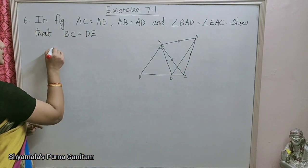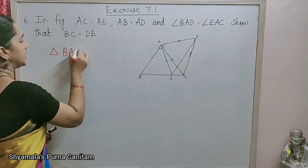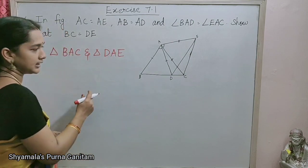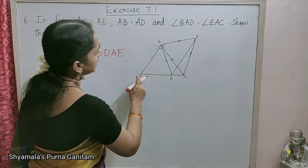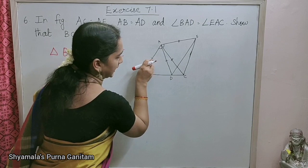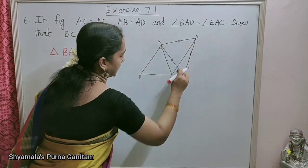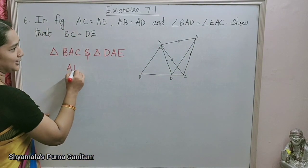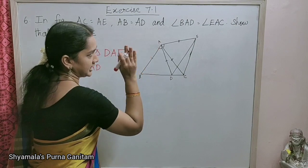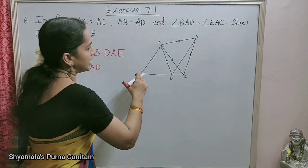In triangle BAC and triangle DAE, we will compare these two triangles. It is given in the question that AB is equal to AD. So AB is equal to AD. And AC is equal to AE — this is also given in the question.